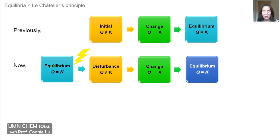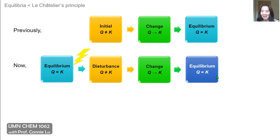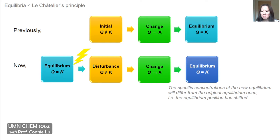Now these problems have an extra step. Initially we are at equilibrium — Q equals K. But then a disturbance ensures that Q no longer equals K. When that happens, the system undergoes an internal change to recalibrate and re-equilibrate back such that Q again equals K. These two equilibrium positions are different, even though in both cases K has the same value, because the specific concentrations will differ from the original ones — maybe it's a new pressure, volume, or temperature.